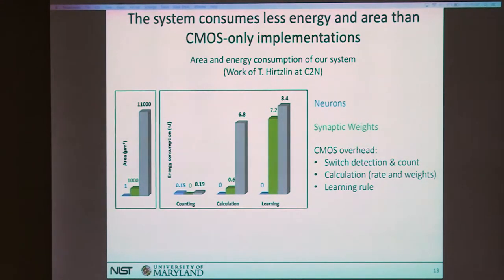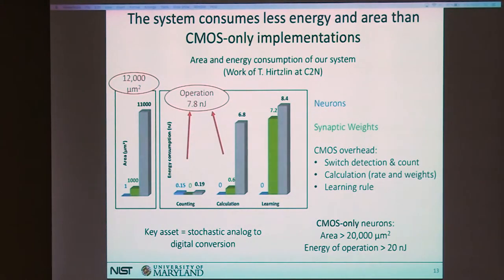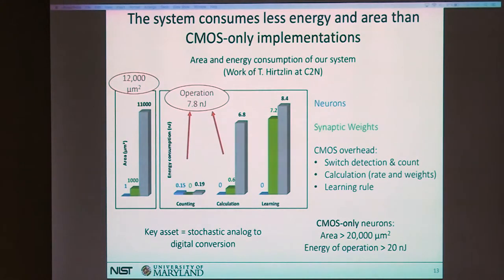Comparing to CMOS-only neuron implementations, even taking the best published numbers, our system consumes less energy and takes less area on the chip. The key reason is that in all CMOS implementations, the bottleneck is going from analog real-world signals to digital encoding, which consumes a lot of energy. In our system, we have an intrinsic stochastic analog-to-digital conversion performed by the stochastic junction itself, overcoming the energy bottleneck. This shows the system is promising for real applications.